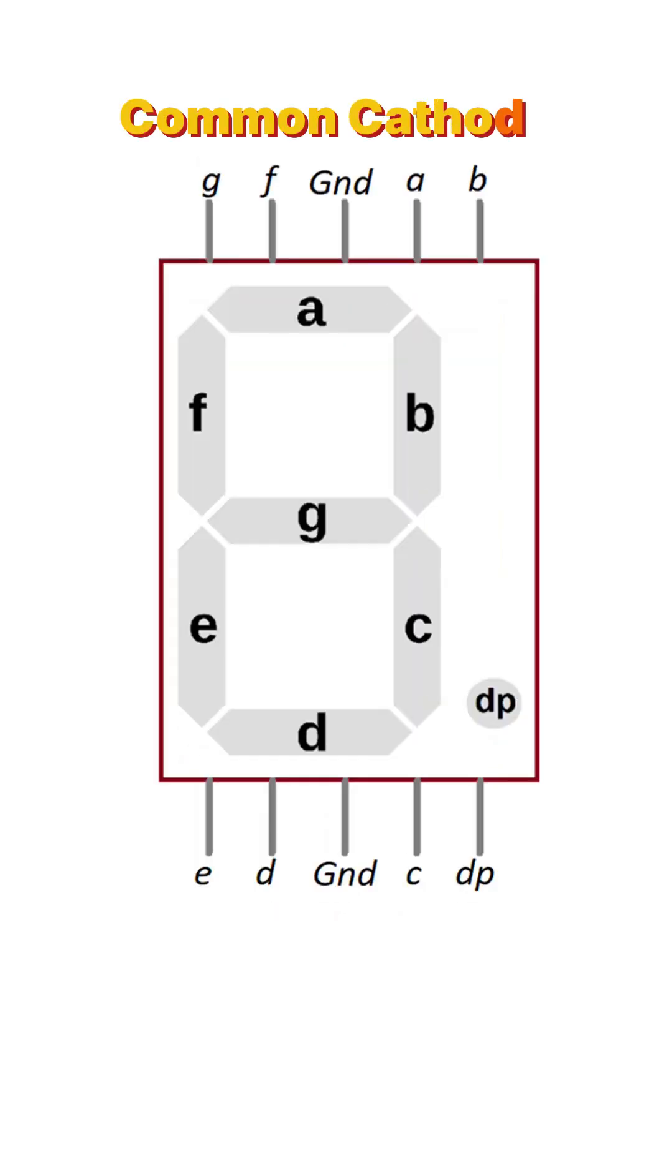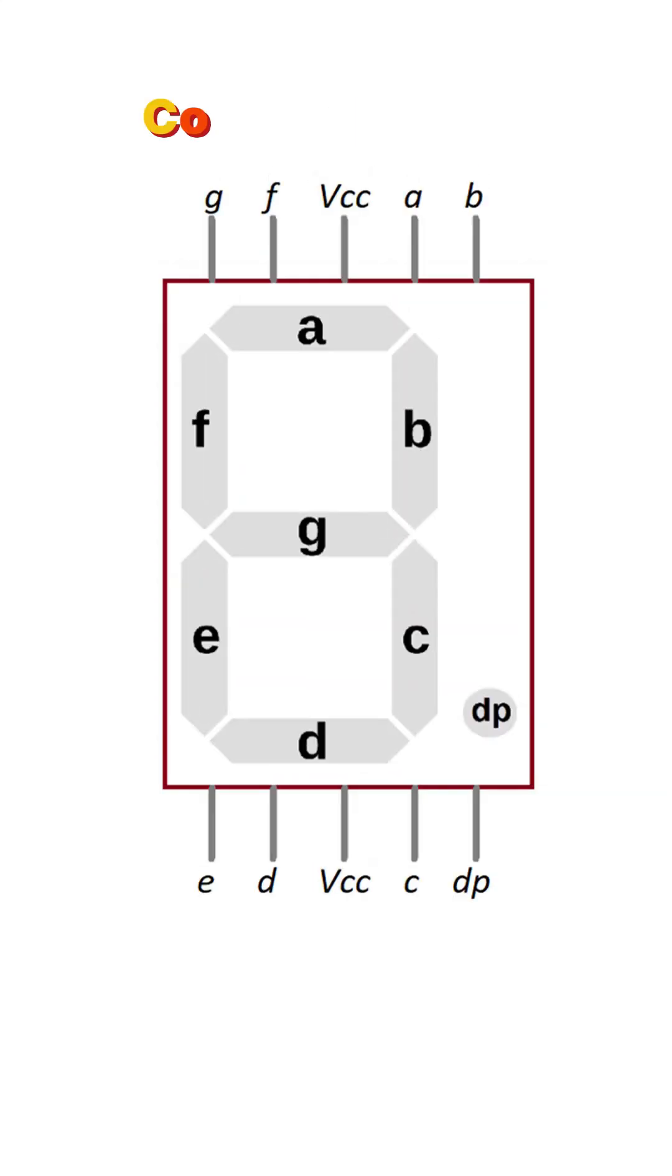It comes in two types. Common cathode, where common pins go to ground. Common anode, where common pins go to 5 volts.